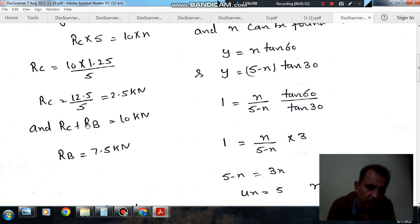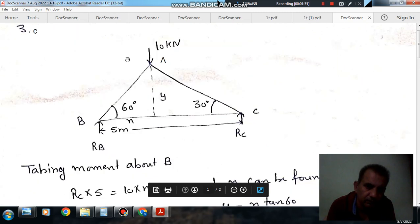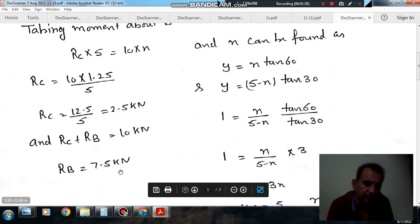Now we can put the value of x here. RC will be 2.5 kN, and RC plus RB is the 10 kN total load, so RB will be 7.5 kN.